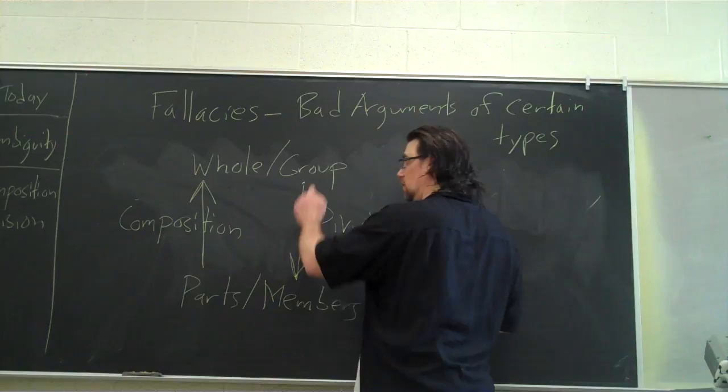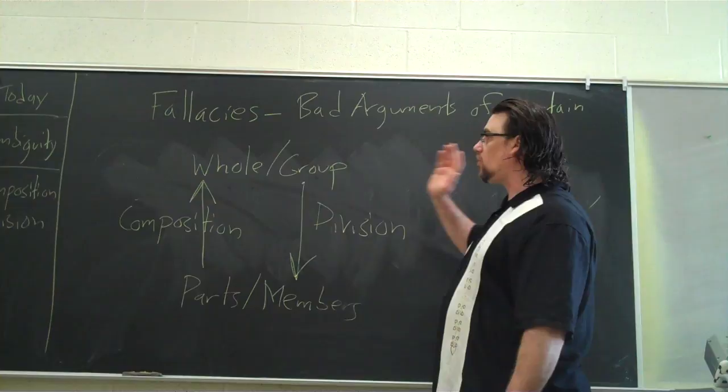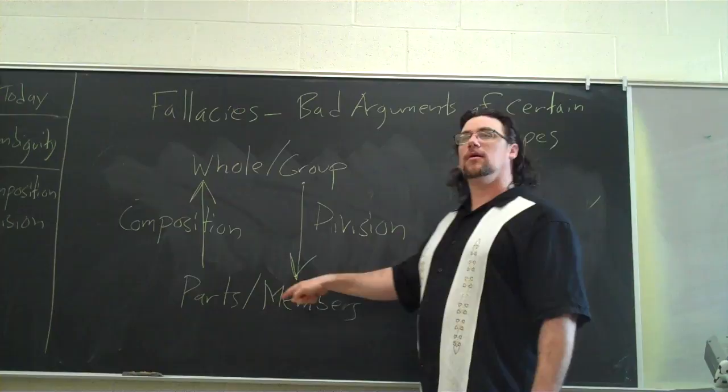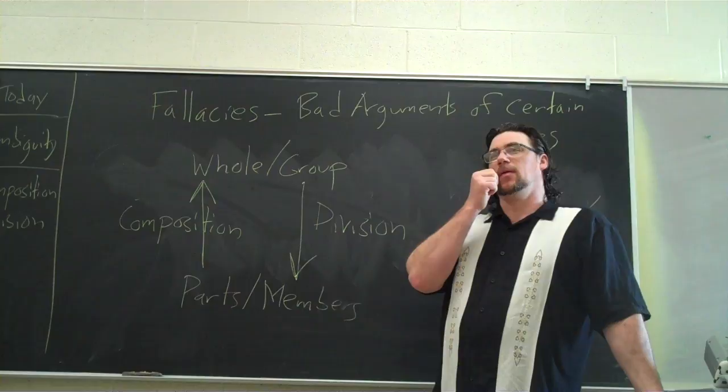What makes it a fallacy is that it's a bad argument — that the whole and parts don't share the same quality. What makes it this fallacy or that fallacy depends on which direction the argument moves: if the argument starts with the whole and concludes about the individual, that's division; if it starts with the individual or pieces and concludes about the whole, that's composition.